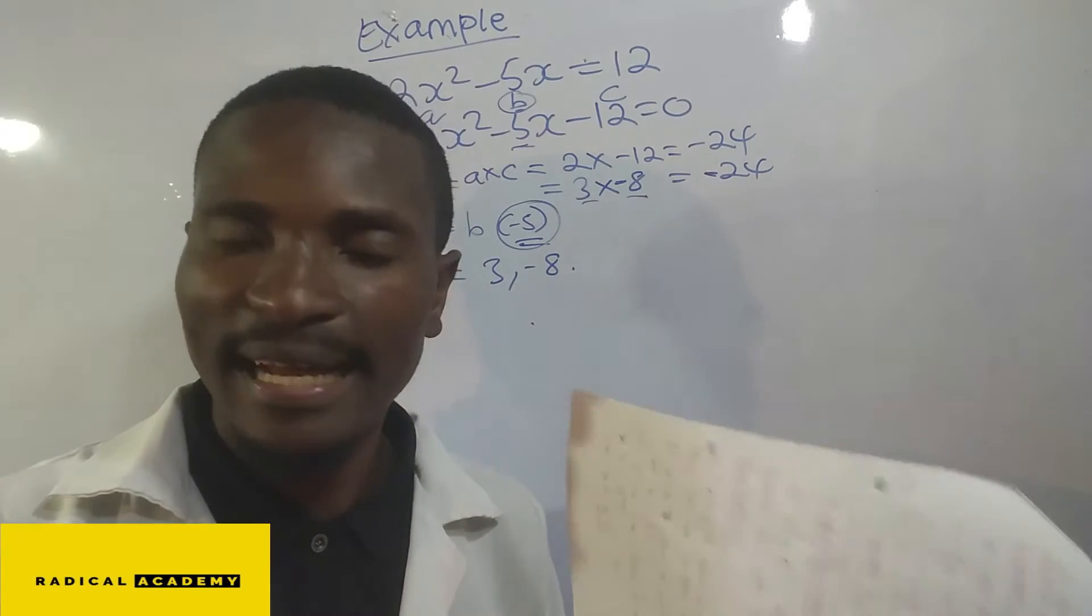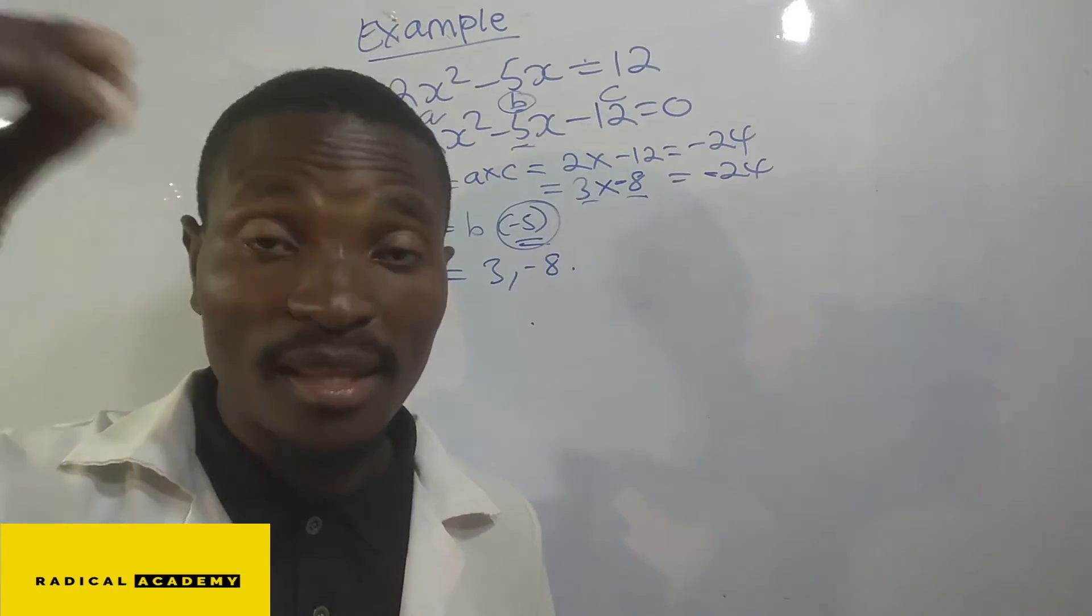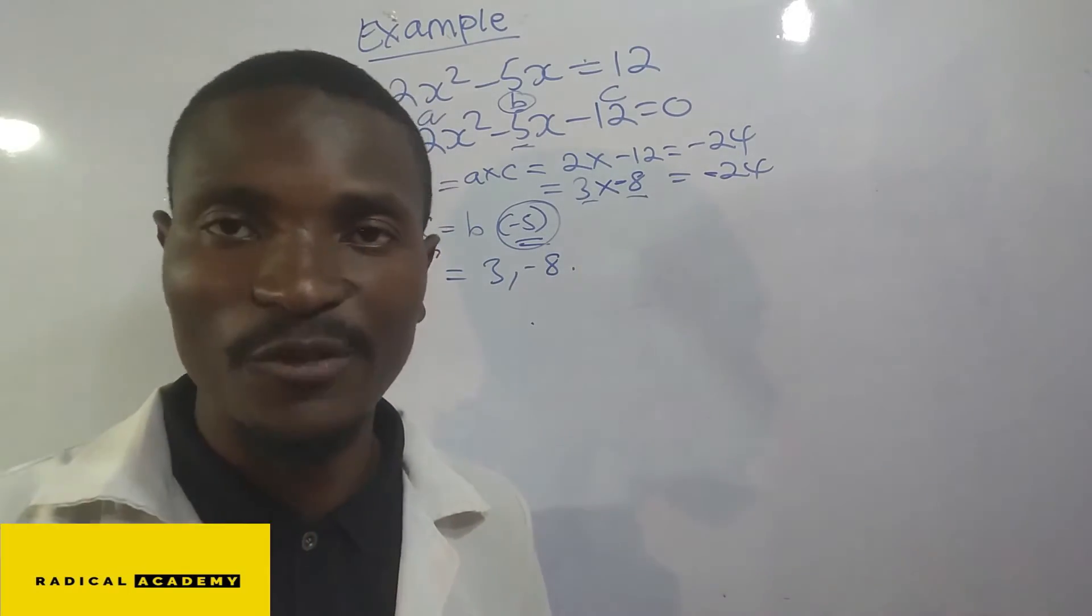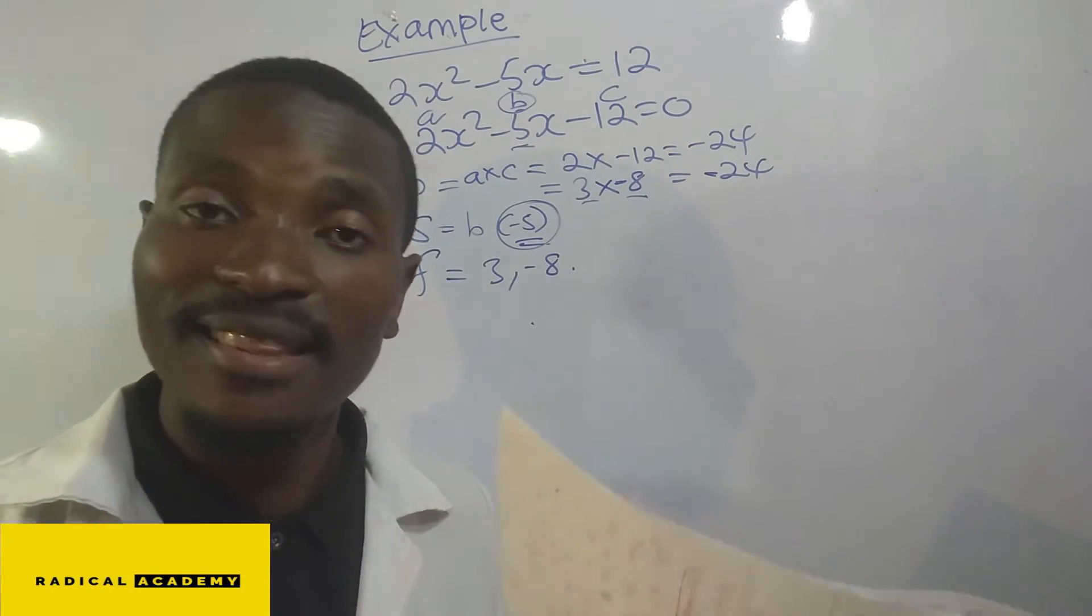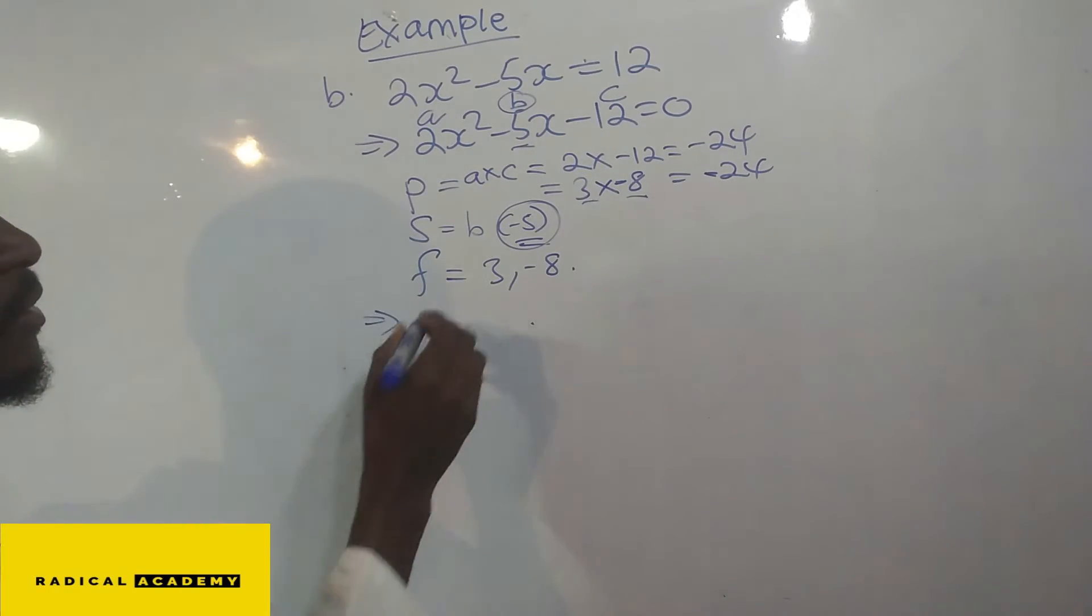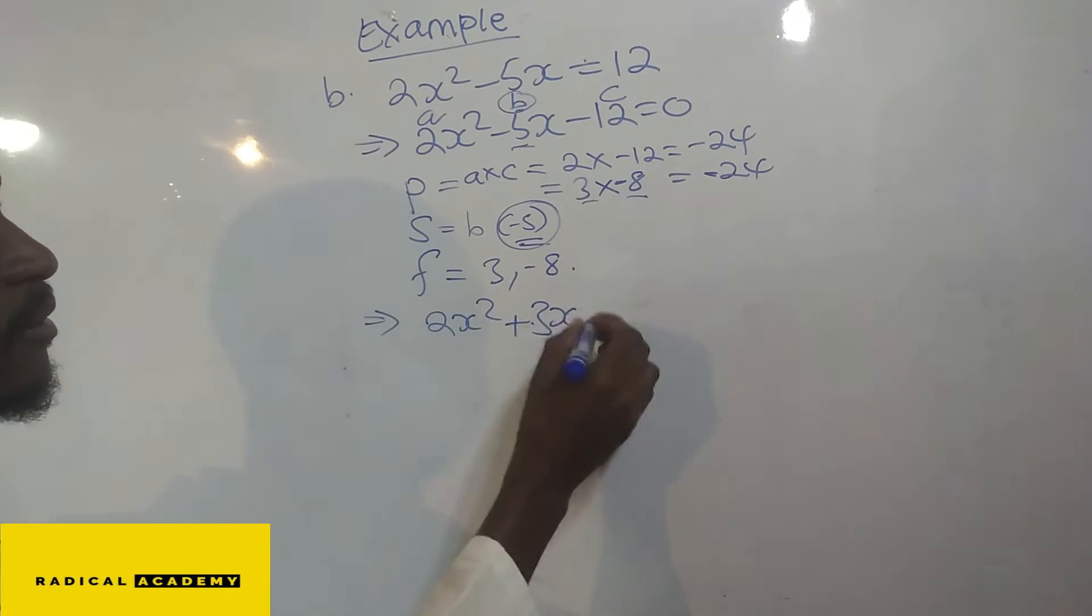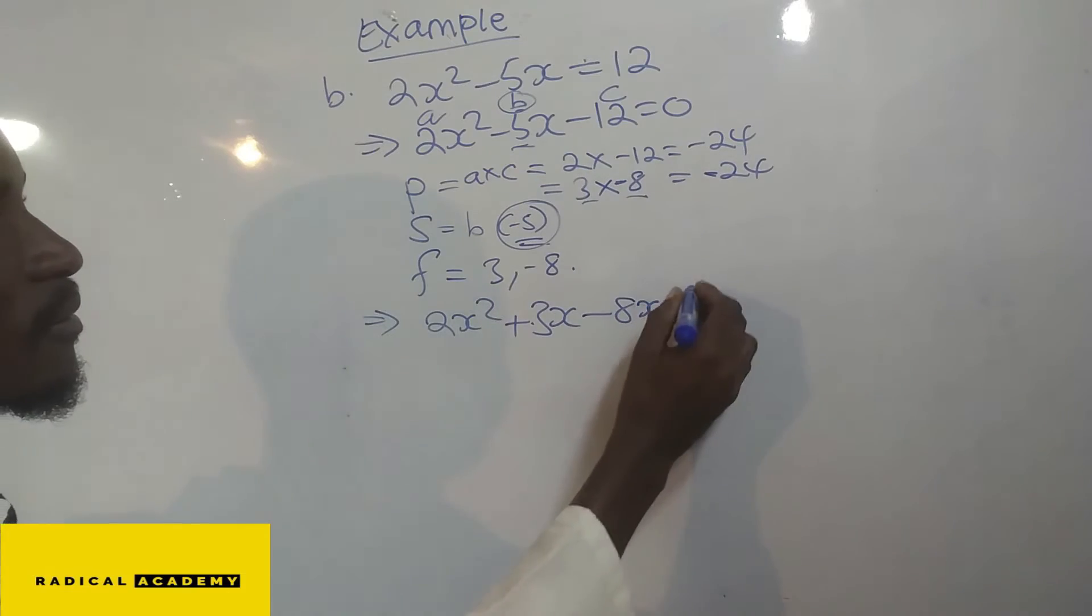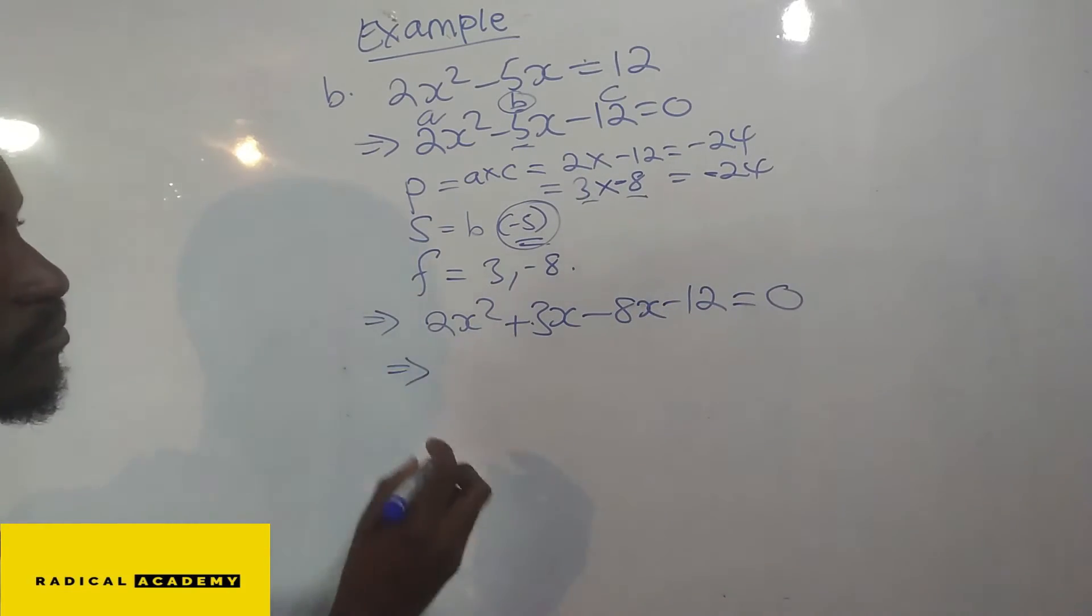Now you take them and then substitute them on the sum in the actual given quadratic equation. Meaning where there is negative 5x, you remove negative 5x, and then you put those two numbers, which is 3 and negative 8.